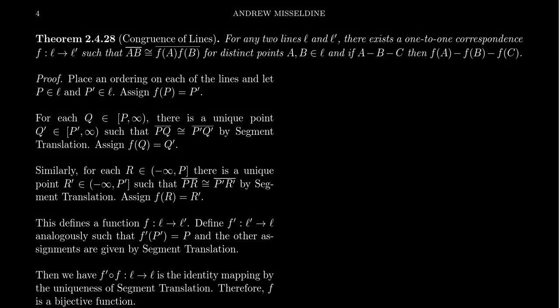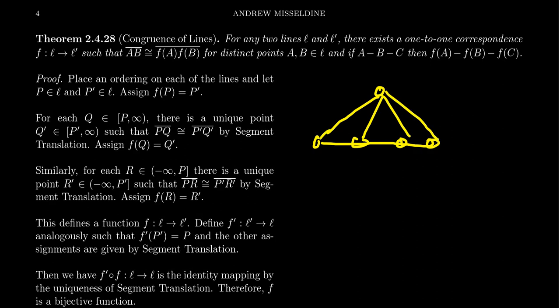In previous lectures of this lecture series, Math 3130, particularly as we studied finite geometries, we often see phenomena like the following. Take, for example, fan geometry. The five-point fan geometry is illustrated here on the screen. One interesting thing with these finite incidence geometries is you often had different types of lines — for example, one line with four points on it, and four other lines with only two points on them. These lines are not really the same because of the number of points incident to each.